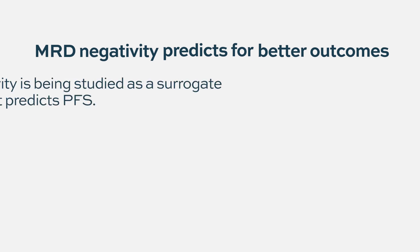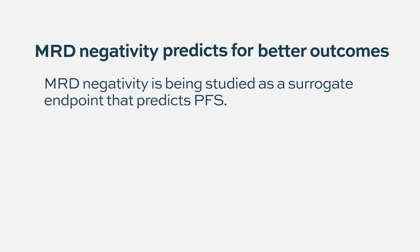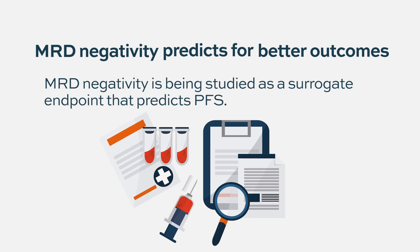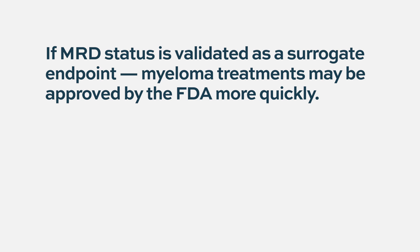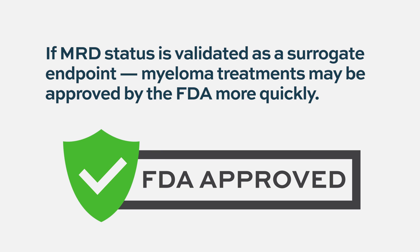There is now a push to use MRD-negative status as a surrogate for progression-free survival. Being able to measure MRD status — positive or negative — after six months of therapy is a lot more feasible than waiting years. Some drugs have progression-free survival of two or three years, so it would take a long time to reach an endpoint acceptable to the FDA for approval.